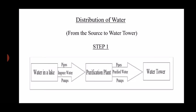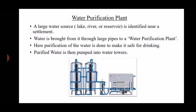Let us learn about the distribution of water. There are two steps involved in this process. Step one: from the source to the water tower. Rainwater is collected in sources such as lakes and rivers. That impure water is brought into a purification plant. After purification, the water is sent to the water tower. A large water source — a lake, river or reservoir — is identified near a settlement. Water is brought through large pipes to a water purification plant, where it is made safe for drinking. Purified water is then pumped into water towers.